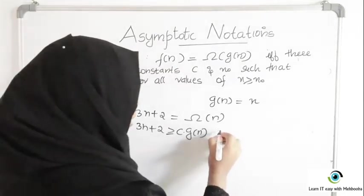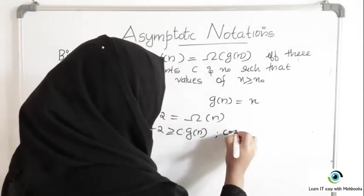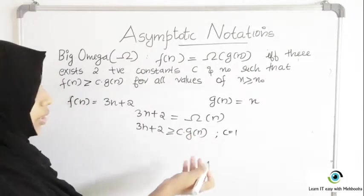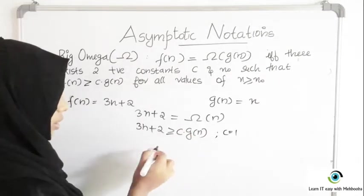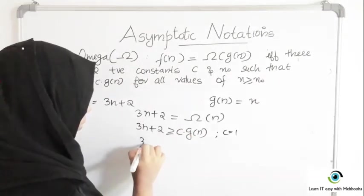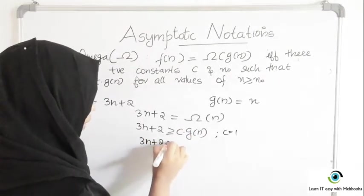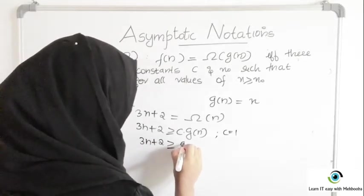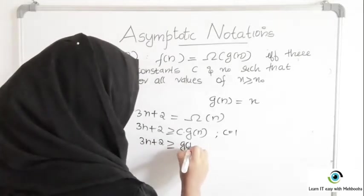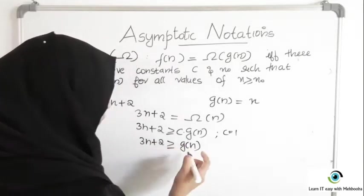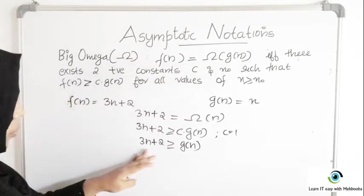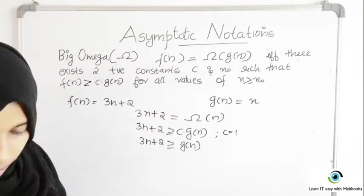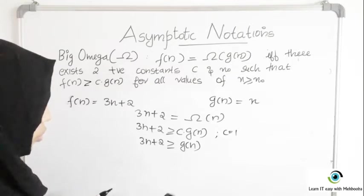For C I am taking the value 1 — it can be any positive constant. So 3N plus 2 greater than or equal to C, which is 1, times G of N, which is 1 times N.